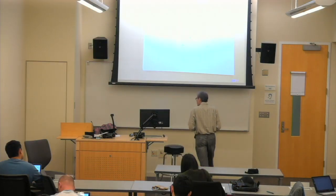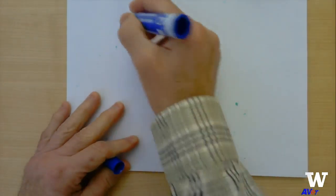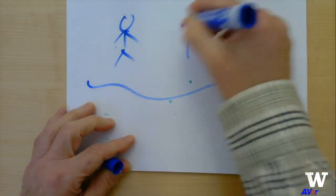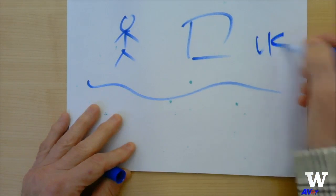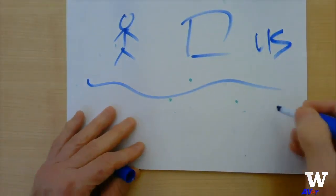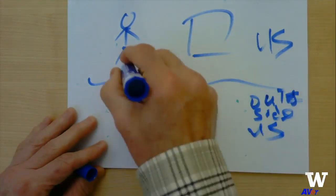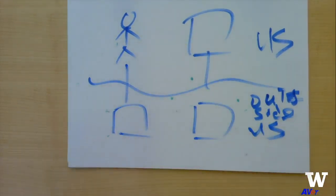The first point is, why is Subpart F there? We draw our usual picture. This is the U.S., this is outside U.S., and we have a corporation underneath. As a simple example as to why Subpart F is there.